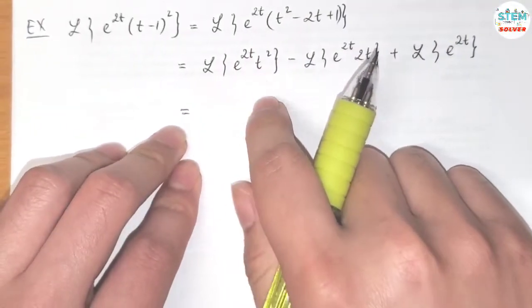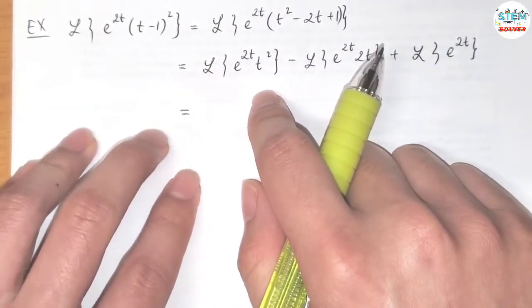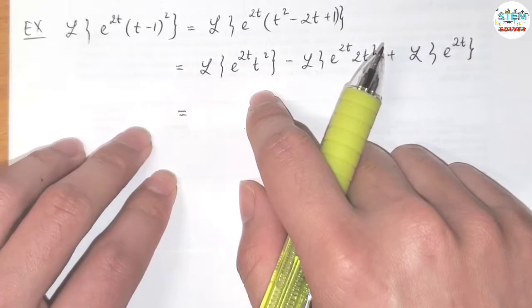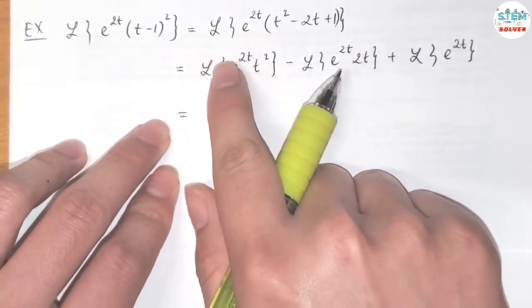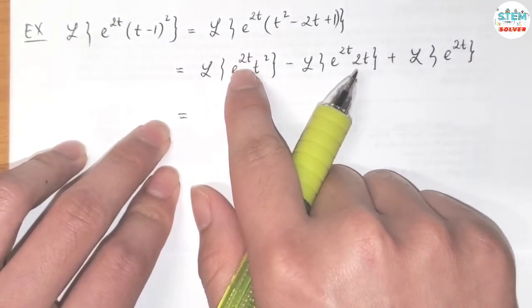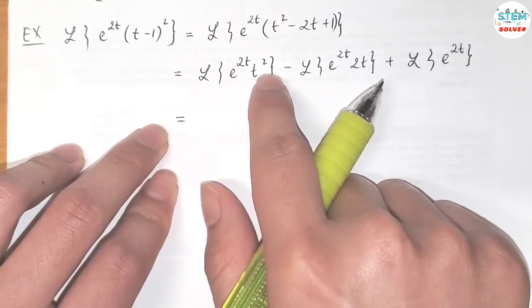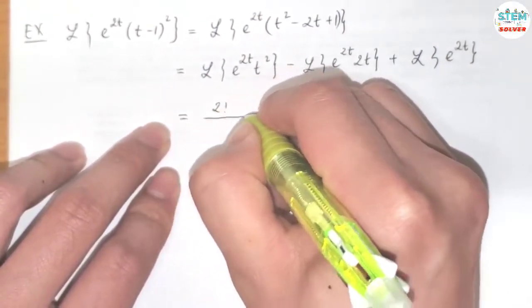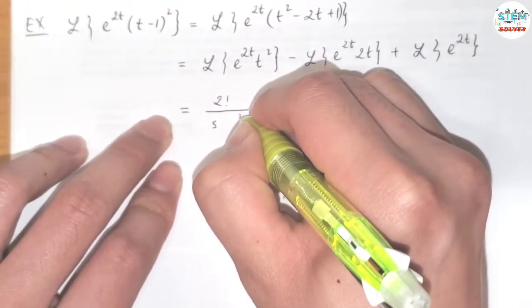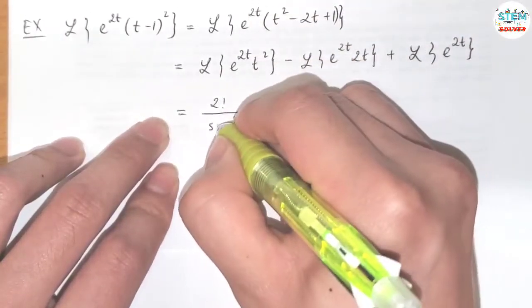Now for this one, I'll use the translation on the s-axis theorem. We have the shift here, shift to the right 2 units and the Laplace transform of t squared is equal to 2 factorial over s cubed. So the shift is 2, so you have s minus 2.